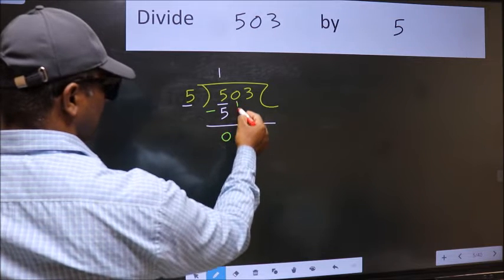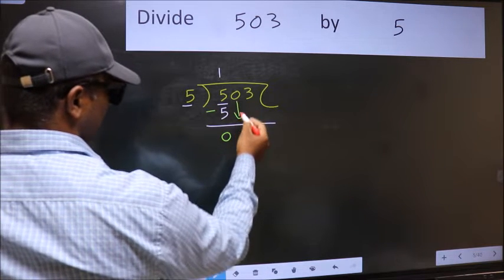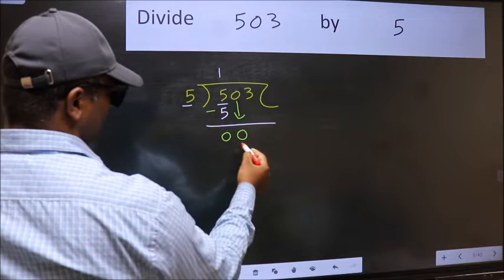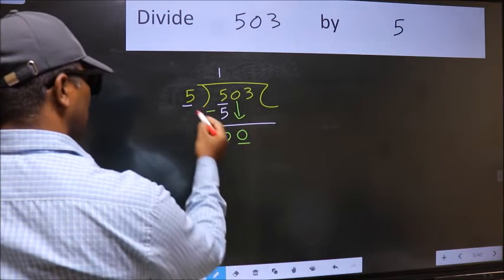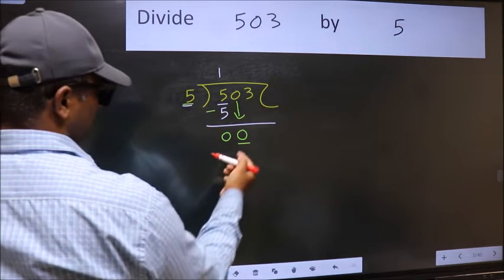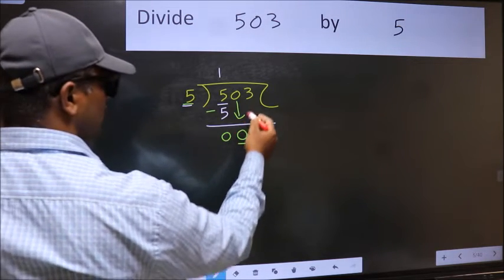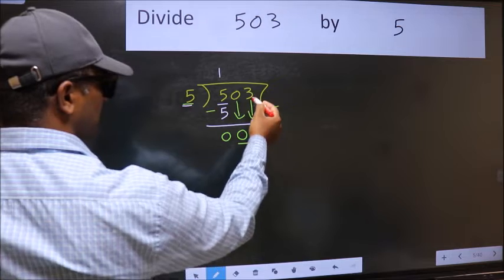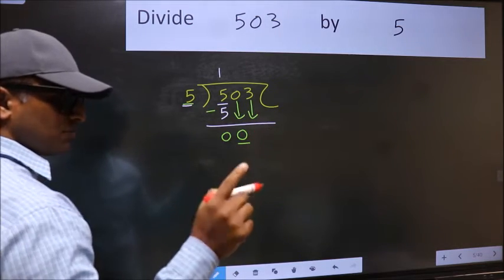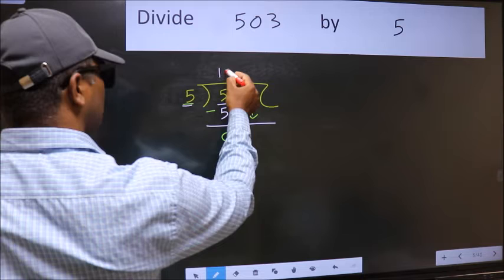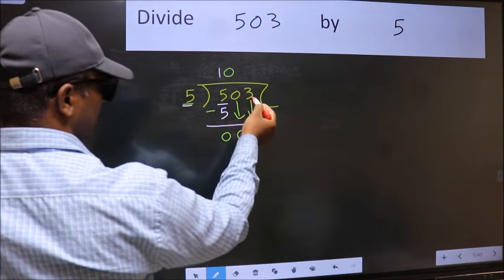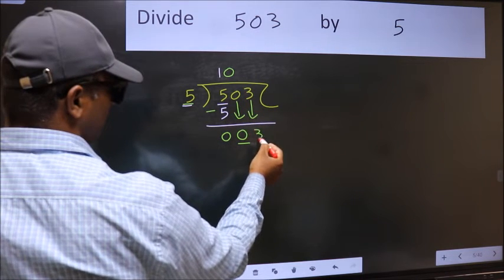After this, bring down the beside number. So 0 down. Now here we have 0 and here 5. 0 is smaller than 5. So we should bring down the second number. And the rule to bring down the second number is we should put 0 here. Then only we can bring this number down.